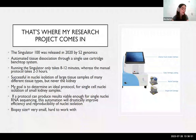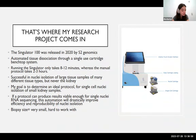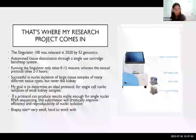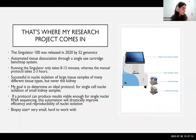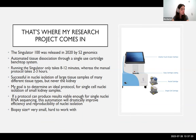As a result, my goal is to develop an ideal protocol for single-cell nuclei isolation of small kidney samples. This is pretty difficult because our goal is to use biopsy-sized tissue samples, which are very small, and as this Singulator machine has only been used on large samples, we have been encountering moments where the samples have been easily damaged. However, if I can develop a protocol that results in viable nuclei for single-nuclei RNA sequencing, this automation will drastically improve the efficiency and reproducibility of nuclei isolation.